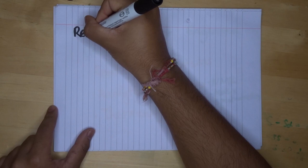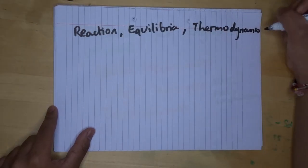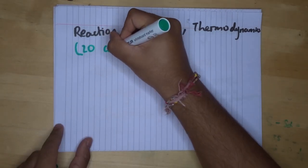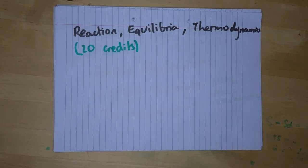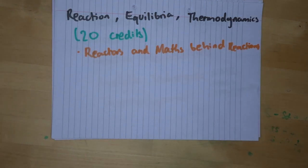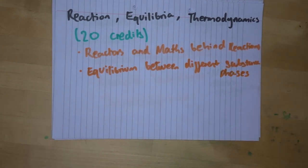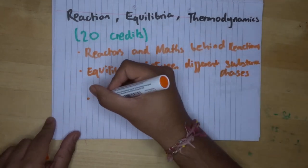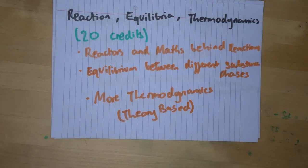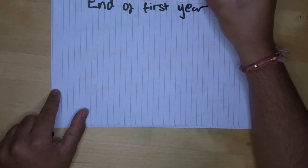The last module of chemical engineering in first year is reaction, equilibria and thermodynamics. This is another 20 credit module. It is a triple barrel module, so it has three different parts. The first part is reactors and the math behind reactions. The second part is equilibrium between different substance phases such as solid and gas, liquid and gas and solid and liquid. And then the third part is just more thermodynamics, but this is more theory based. And that brings us to the end of the first year.